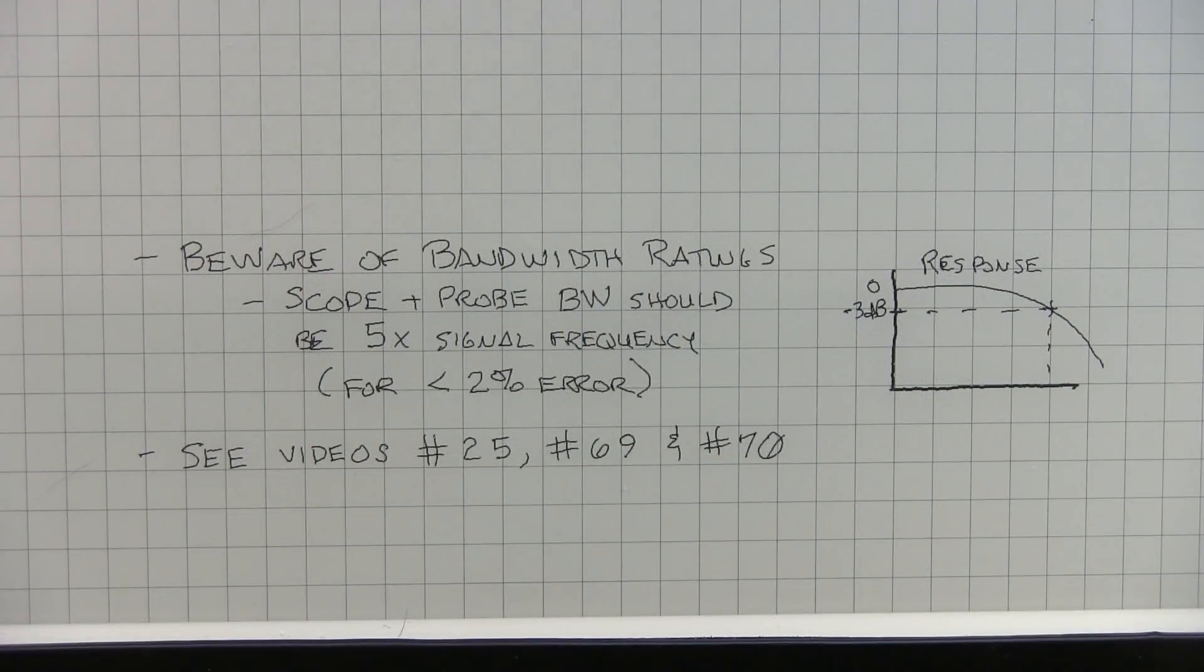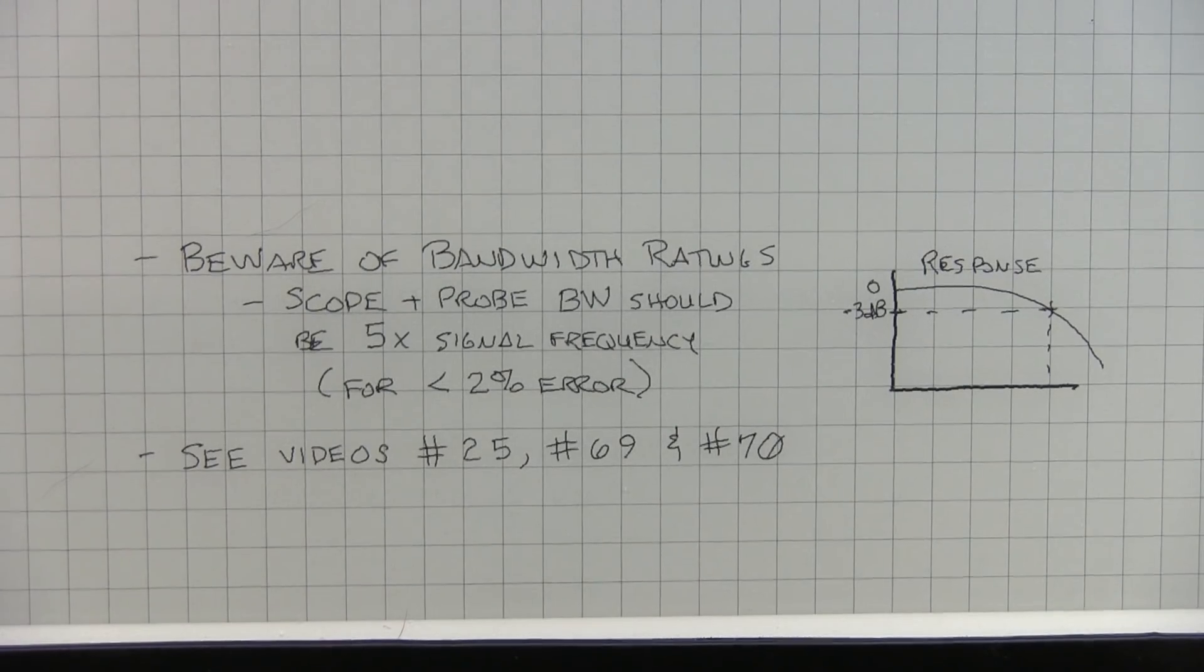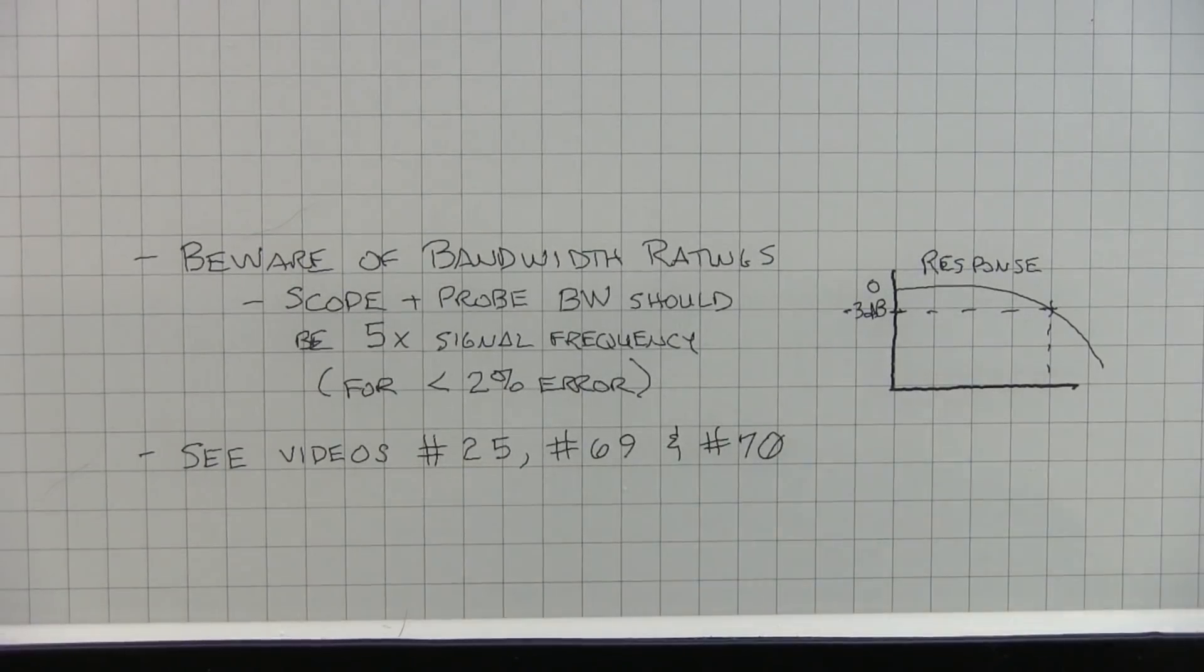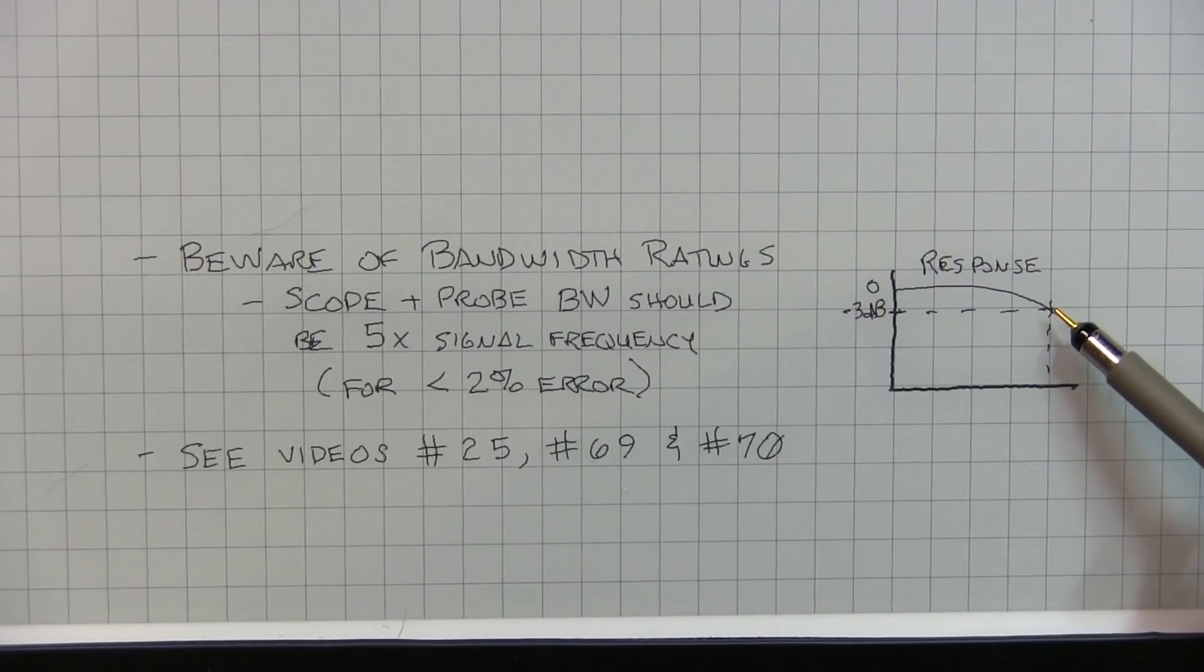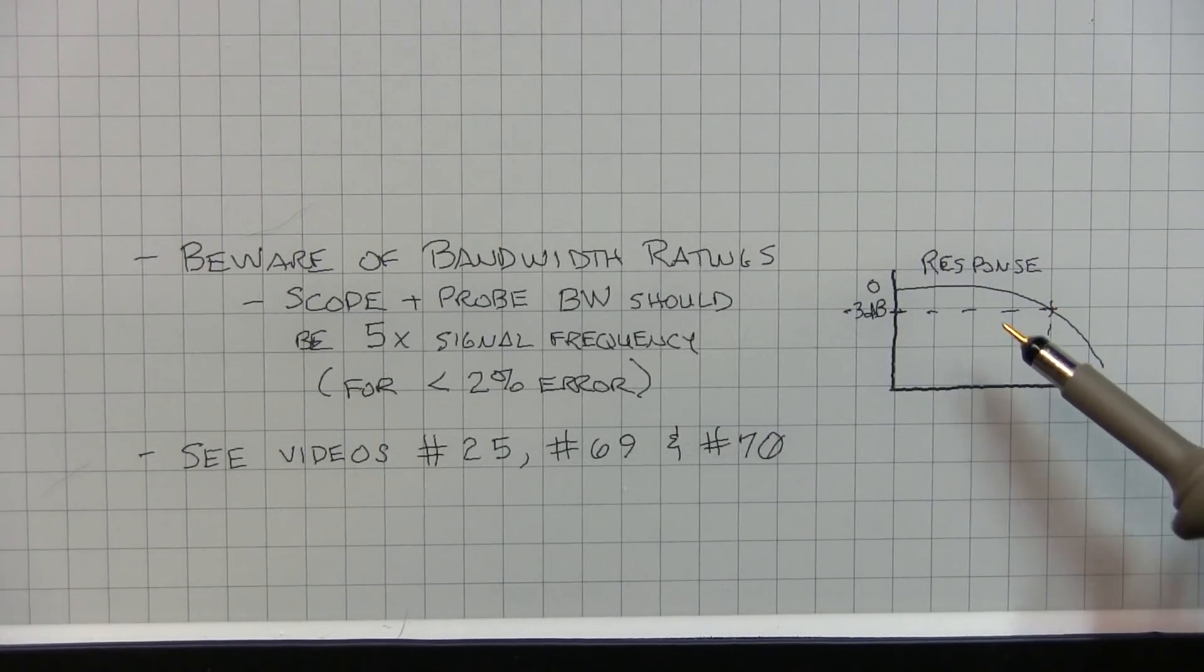Here's where you have to be careful with bandwidth ratings. The scope I'm using here is a 100 megahertz scope. So you say, well, I've got a 90 megahertz signal. It shouldn't be a problem. Well, the reality is that bandwidth rating refers to the frequency at which the amplitude is down by 3 dB or maybe a little bit less. So that roll-off is relatively smooth.